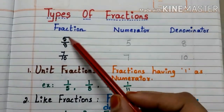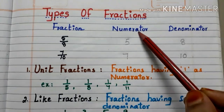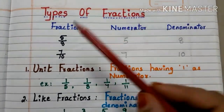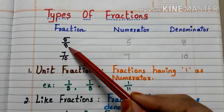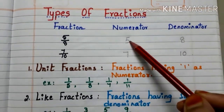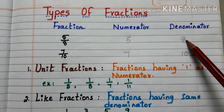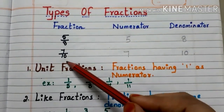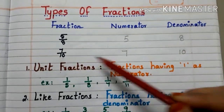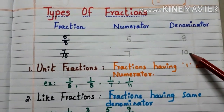Here we have fractions, and for these fractions we have to write the numerator and denominator. In 5 by 8, what is the numerator? 5, right? And what is the denominator? 8. In 7 by 10, what is the numerator? 7. And what is the denominator? 10.